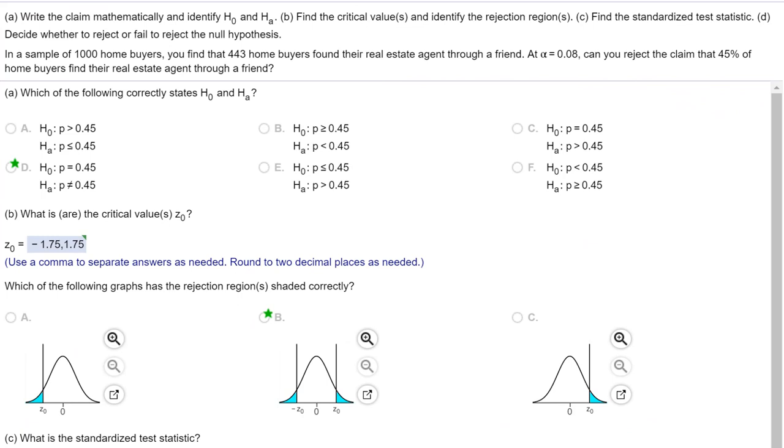I have a problem out of chapter 7. Let's scan it and read the actual problem statement. We're given a sample of 1,000 homebuyers. We find that 443 found the real estate agent through a friend. We're given an alpha and it asks can you reject the claim that 45% of homebuyers find their real estate agents through a friend.